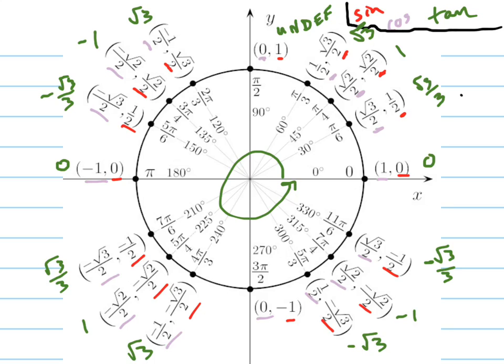And the answer is negative 1 half right here at 11π over 6, and also at, did I do that right? Yeah, no, I was just looking at the wrong one. Yeah, and at 7π over 6.